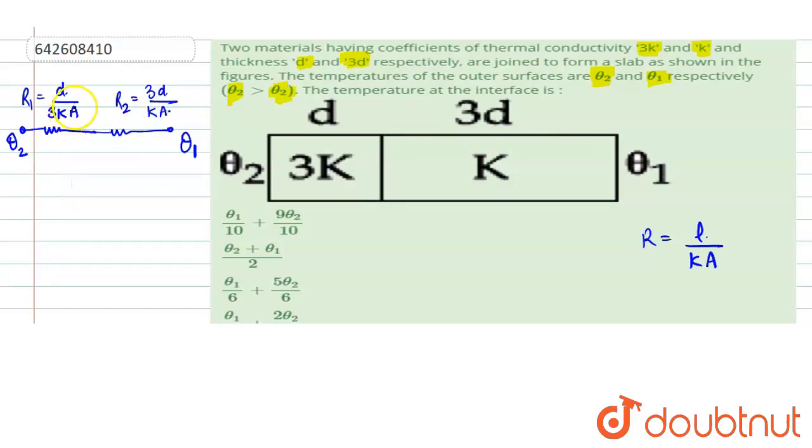If we see that resistance R1 is d upon 3k into A, if we call it as R, then the resistance R2 will become 3d upon Ka. That becomes 9 times of R.